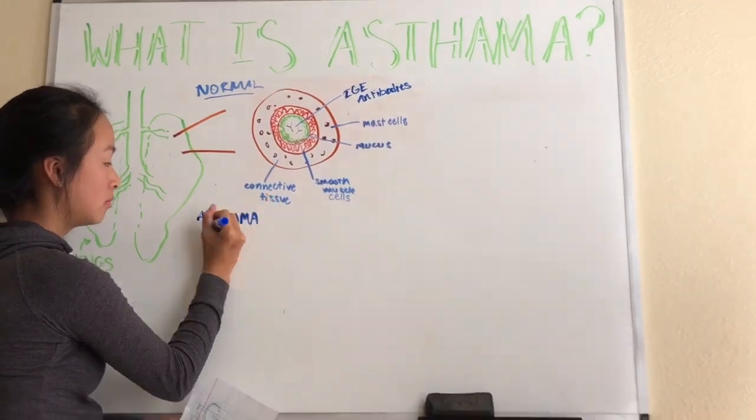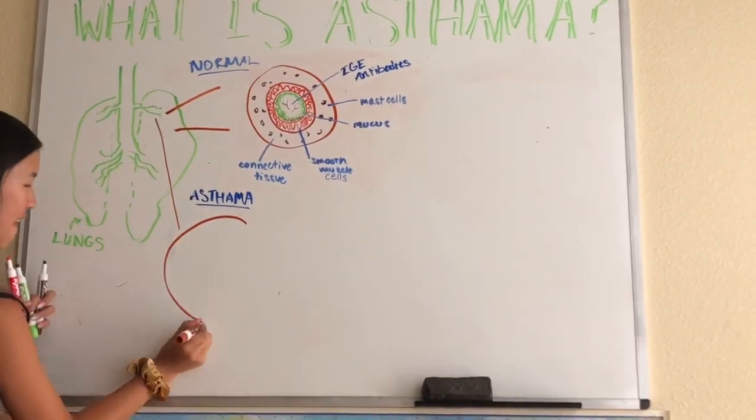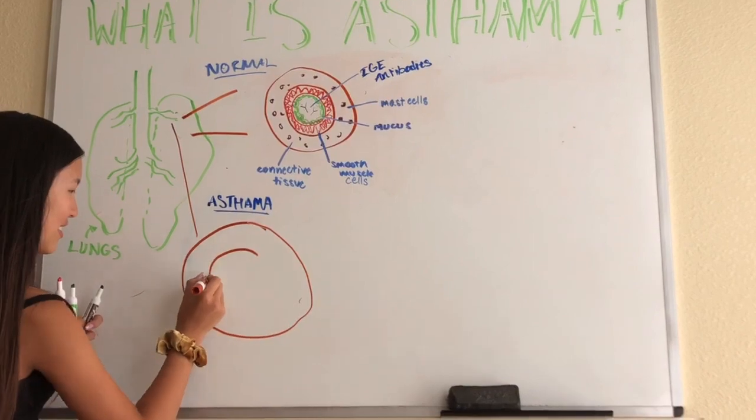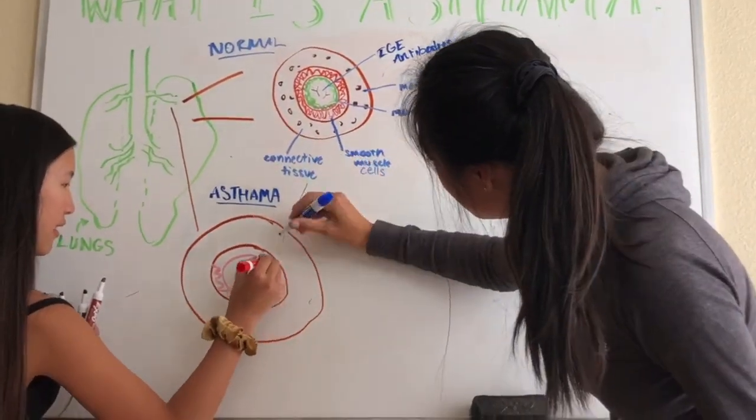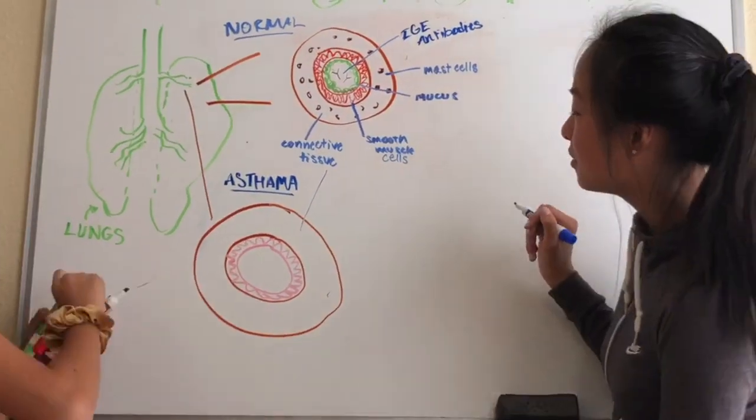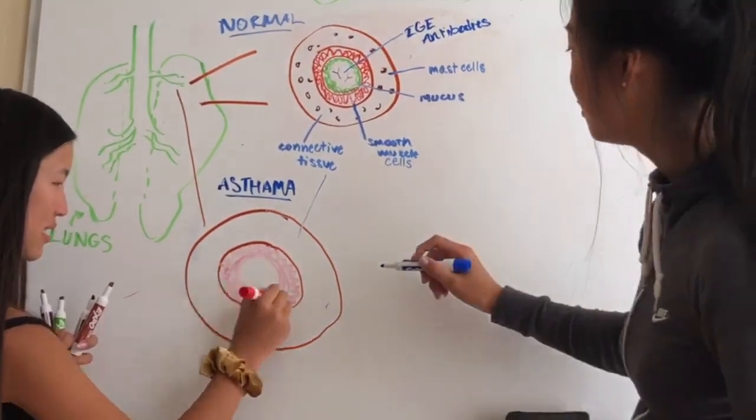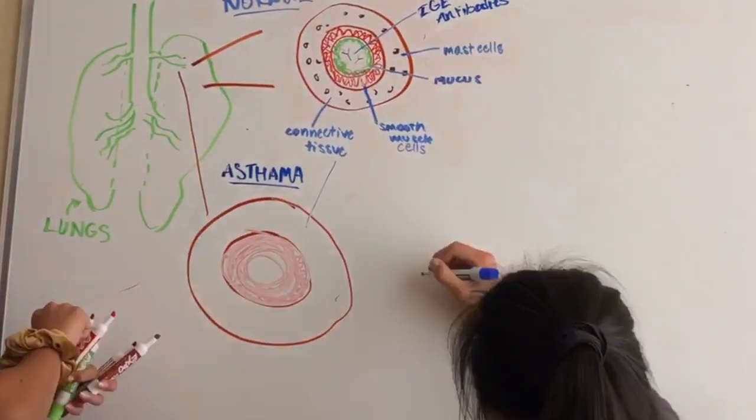When someone inhales dust, pollen, or smoke, their bronchioles constrict, undergoing a process called bronchoconstriction. This decreased radius of the lumen causes coughing, wheezing, and several other symptoms.